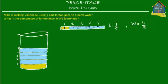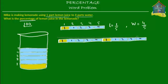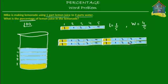We have to find what percentage of lemon juice is in the lemonade. When we say percentage, we mean: if there were one hundred parts of the lemonade, how many of those hundred parts would be lemon juice? So let's take this model diagram and instead of five parts, let's make it one hundred parts.